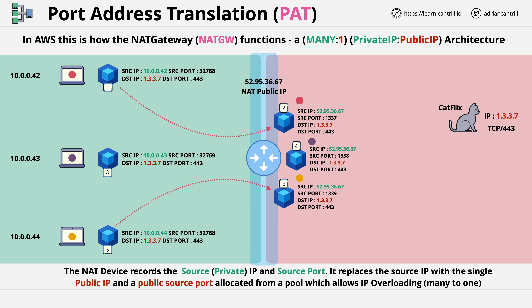It would change the source IP address from the private IP to the single public IP, and it would change the source port of 32768 to a unique new source port — in this case, 1339.